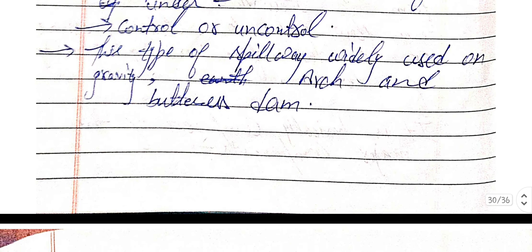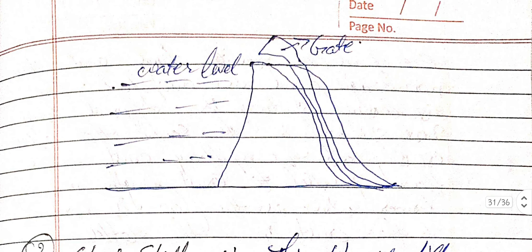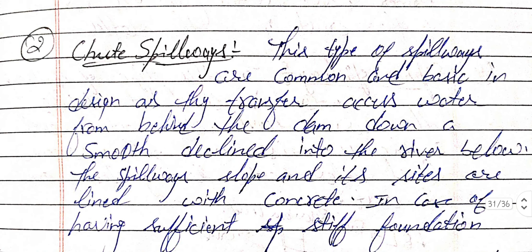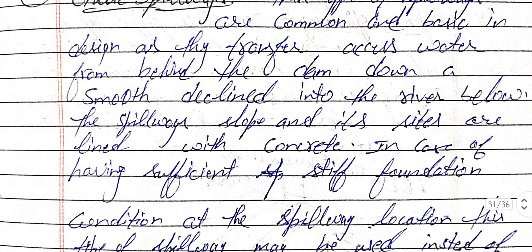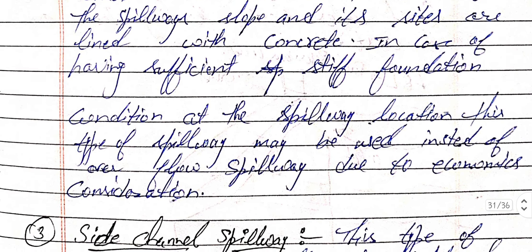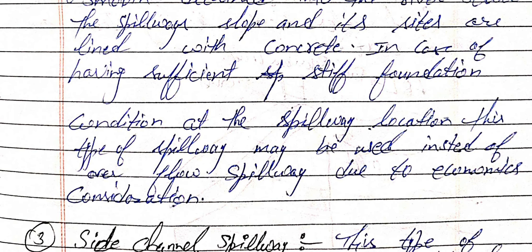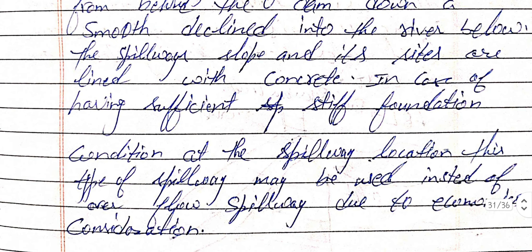This is the diagram for the overflow spillway showing the S-shaped profile. Next is the chute spillway. This type of spillway is common and basic in design — it transfers excess water from behind the dam down a smooth decline into the river below. The spillway slope and its sides are lined with concrete. Under heavy or sufficient stiff foundation conditions, this type may be used instead of the overflow spillway due to economic considerations.